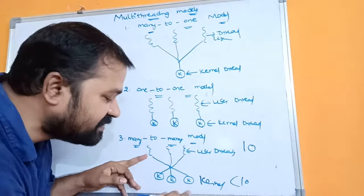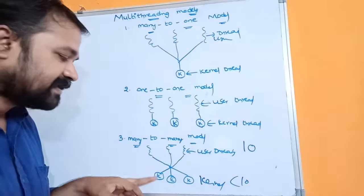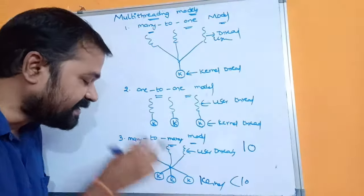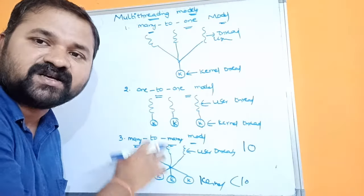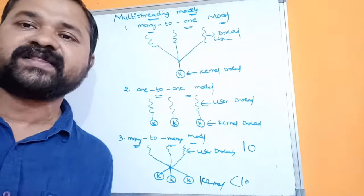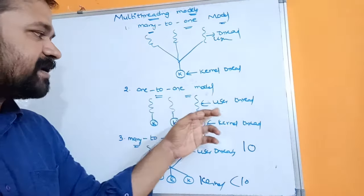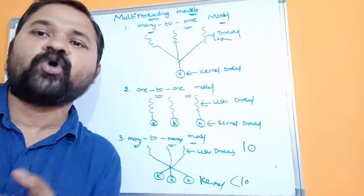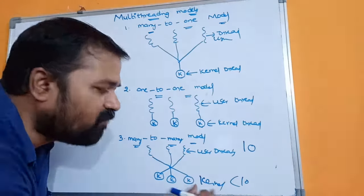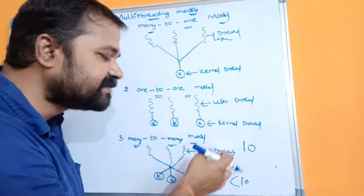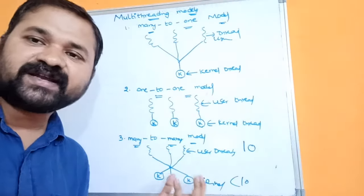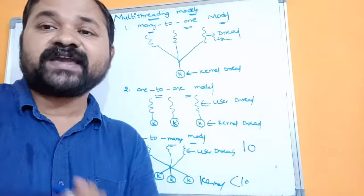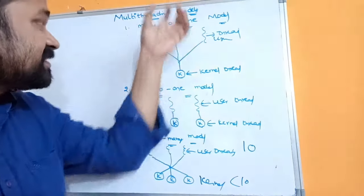If one thread is blocked, there is no problem, because the remaining kernel threads will access the corresponding user threads and they will be executed by the CPU. Unlike the one-to-one model, the operating system does not need to create as many kernel threads here. Since the number of kernel threads is less than or equal to the number of user threads, there is no unnecessary burden on the system.